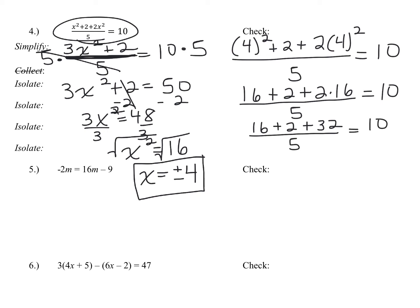And then I go ahead and add 16 plus two is 18, and 18 plus 32 is 50. So I get 50 over five is equal to 10. 50 divided by five is 10. So you get 10 is equal to 10. So it checks out.